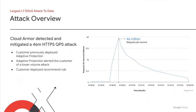I'll dive into the details of that peak attack. A long-time customer was targeted with the largest Layer 7 DDoS attack reported to date at 46 million requests per second. Fortunately, the attack failed to seriously impact the customer's application because they were already running adaptive protection, which allowed us to notify them of a growing attack early and empowering the customer to rapidly take action. By the time the attack ramped up to its peak, the customer had already deployed the adaptive protection recommended rule, allowing us to step in and block an overwhelming majority of the unwelcome traffic.